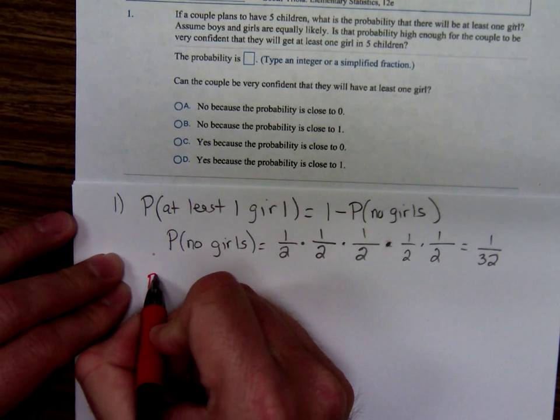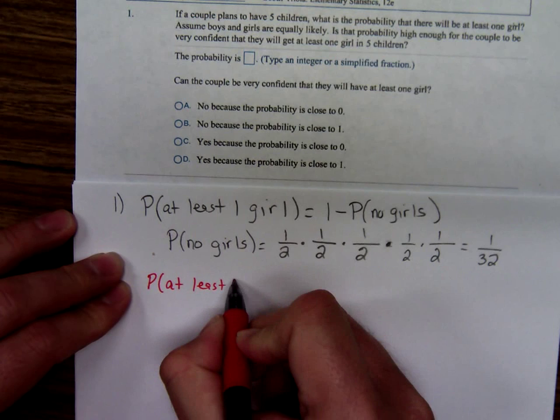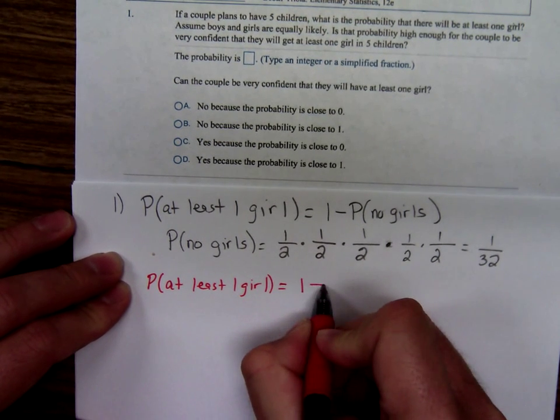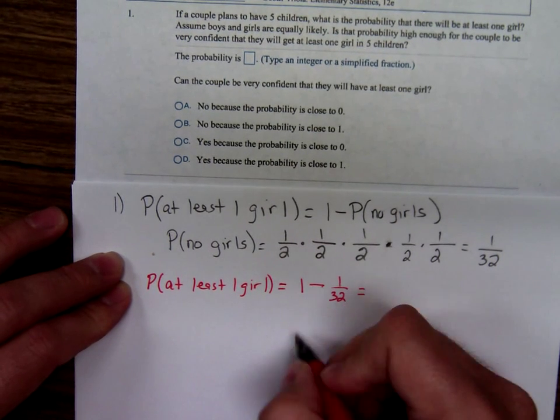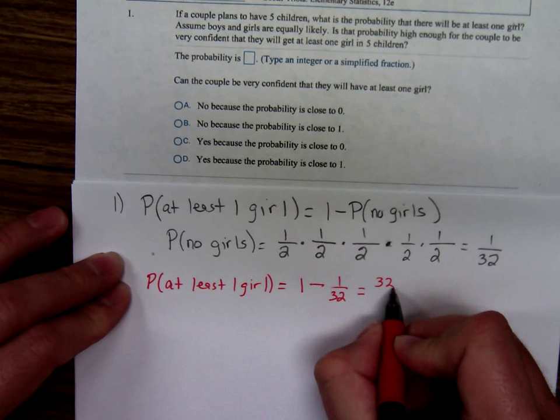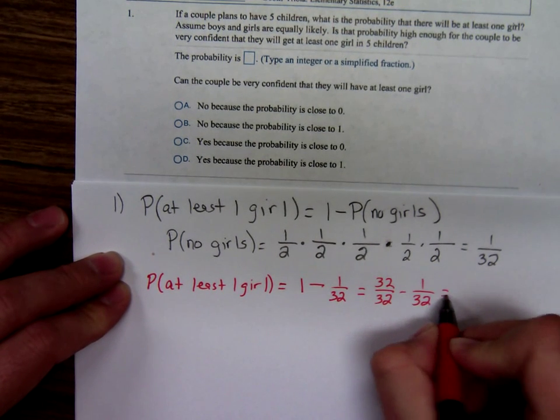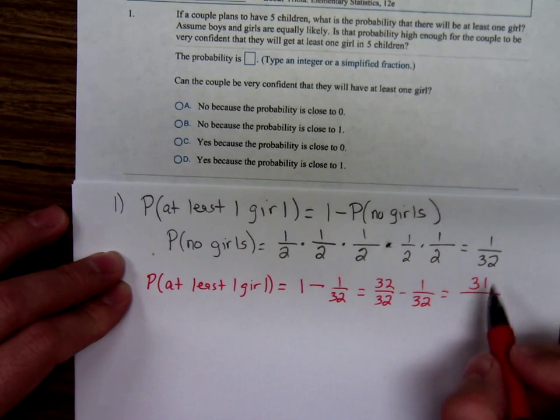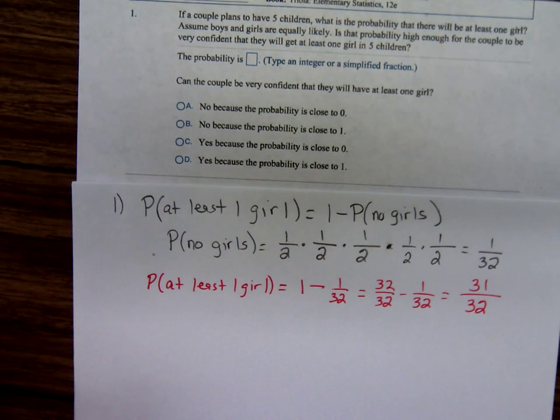So the probability of at least one girl would be one minus one over 32. If we think of that one as 32 over 32 minus one over 32, the probability of getting at least one girl is 31 over 32. That's pretty close to one.